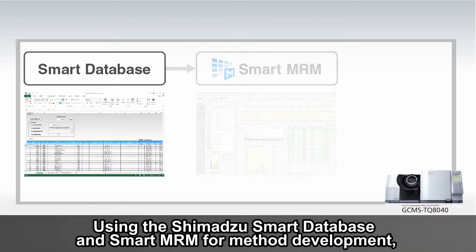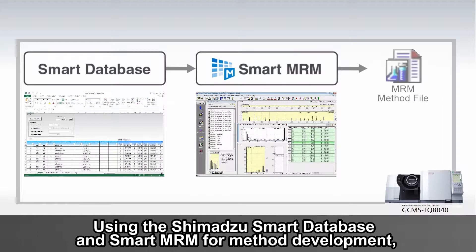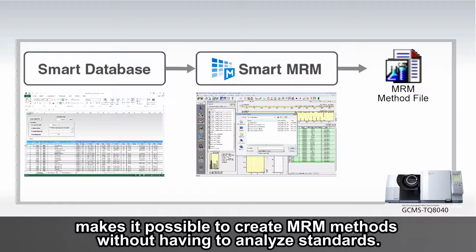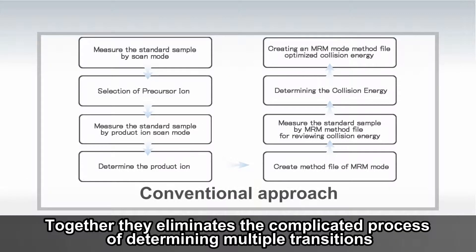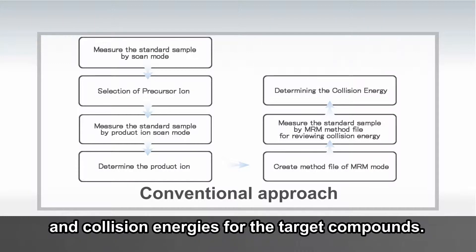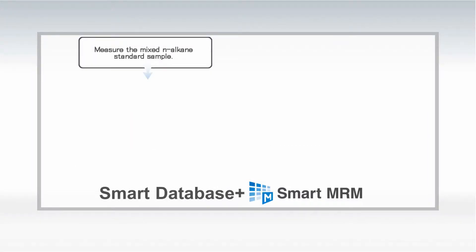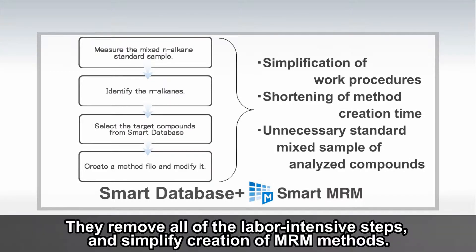Using the Shimadzu Smart Database and Smart MRM for method development makes it possible to create MRM methods without having to analyze standards. Together they eliminate the complicated process of determining multiple transitions and collision energies for the target compounds, removing all of the labor-intensive steps and simplifying creation of MRM methods.